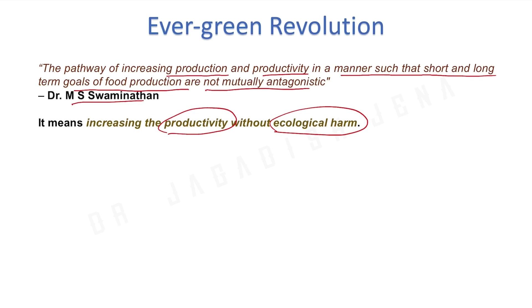How can food production short-term and long-term goals be mutually antagonistic? The short-term goal of food production means, in present conditions, how we can achieve food security — we need to explore different resources, both off-farm and on-farm, and optimize the resource base. The long-term goal means sustainable agriculture without hampering the ecological aspects or biodiversity.